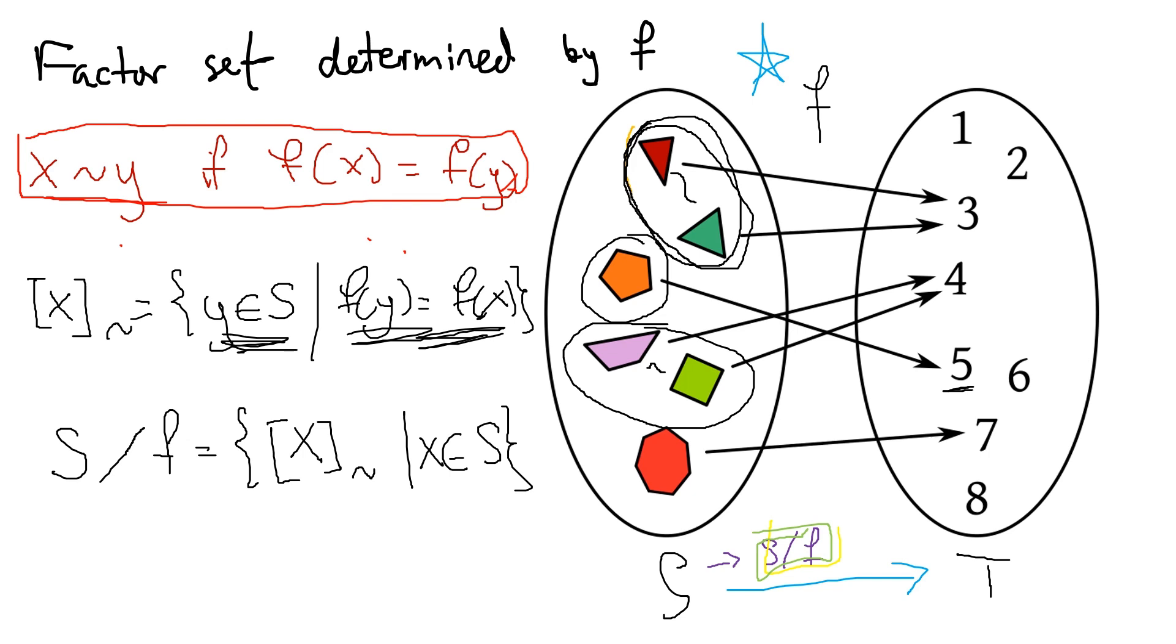And then this seven-sided shape gets mapped to seven. Nothing else is mapped to seven. So these four blobs that I've drawn here, this thing, this thing, this thing, and this thing are all unique elements of the factor set.